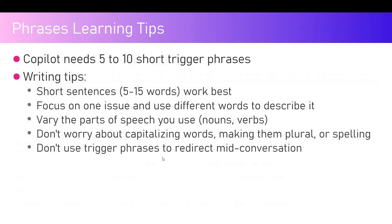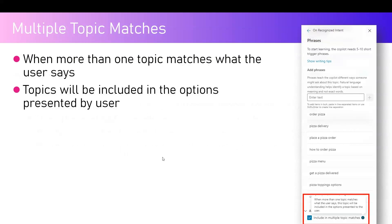For phrase learning tips: Copilot needs five to ten short trigger phrases, though this is not a hard limit — even one phrase will work, but five to ten is advisable so the engine understands the context. Writing tips include: short sentences work best, focus on one issue, use different words to describe it, vary parts of speech using nouns and verbs. Don't worry about capitalization, plurals, or spelling — the Copilot engine is smart enough to handle those.